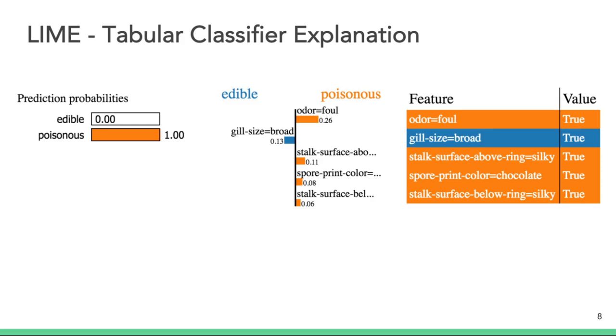The rightmost graph provides feature values for the explained instance that are color coded as well based on the prediction class they support.